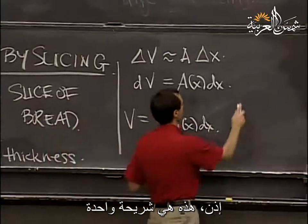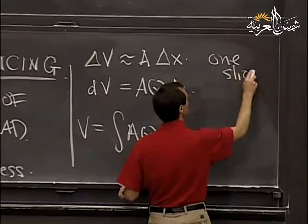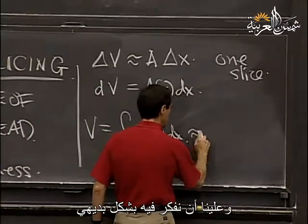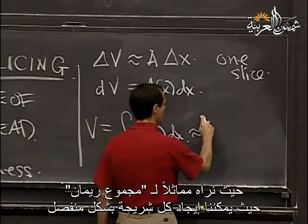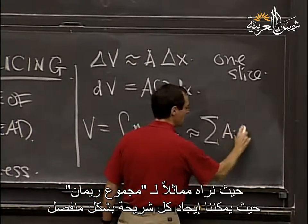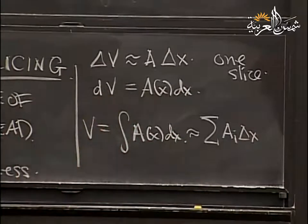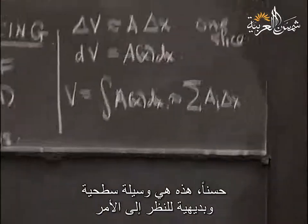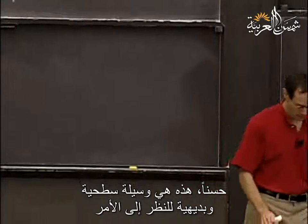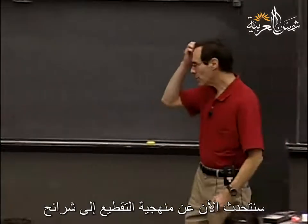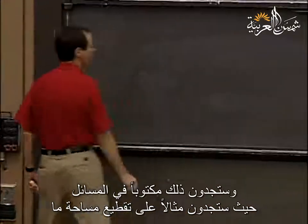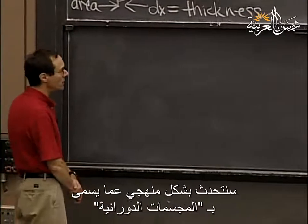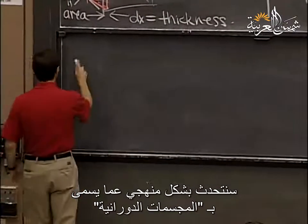This is one slice, and this is the sum. You should think of it in an intuitive way as being analogous to the Riemann sum, where you take each slice individually. That's just a superficial and intuitive way of looking at it. Now we're only going to talk about one kind of systematic slices — something called solids of revolution.